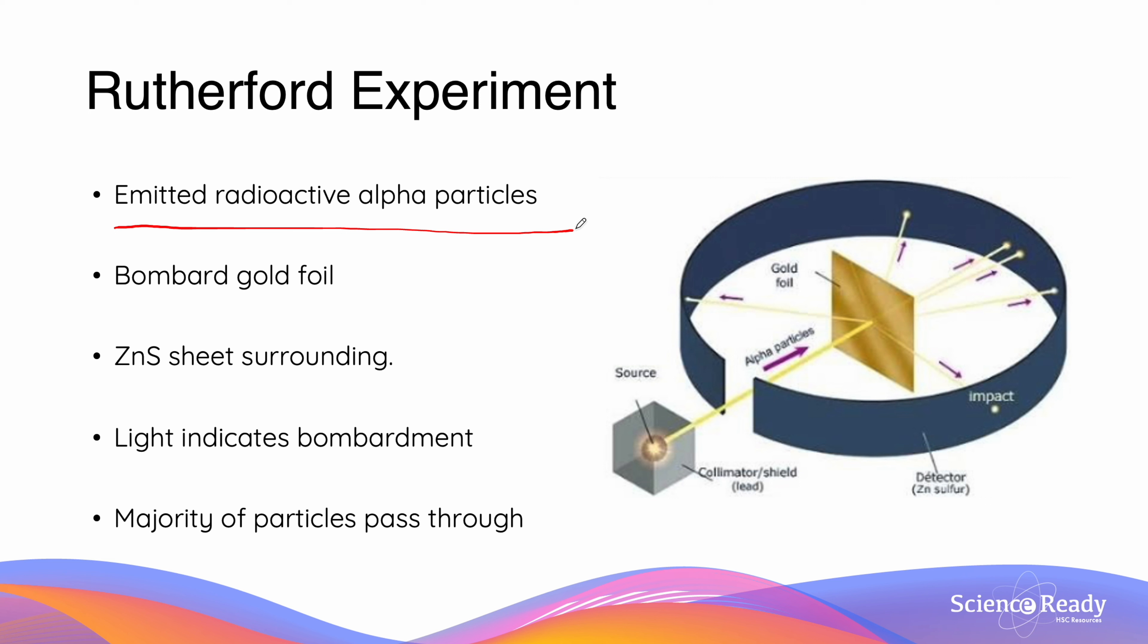The alpha particles would travel in a singular direction towards the gold foil. These alpha particles are a type of radiation which we talk about in the radiation video. These particles have some mass and bombard the gold foil.